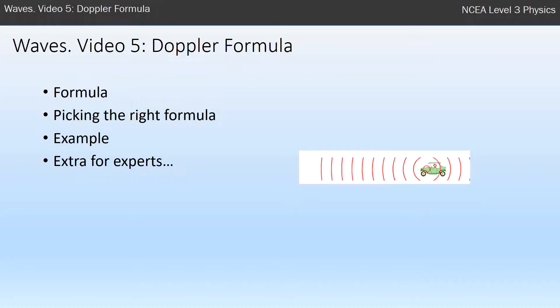Hello, this is Mr. McGovern and this is the fifth video in the series on waves. We are looking at the formula for the Doppler effect. We're going to look at the formula, how to make sure we pick the right one because there's two versions of it, and an example.